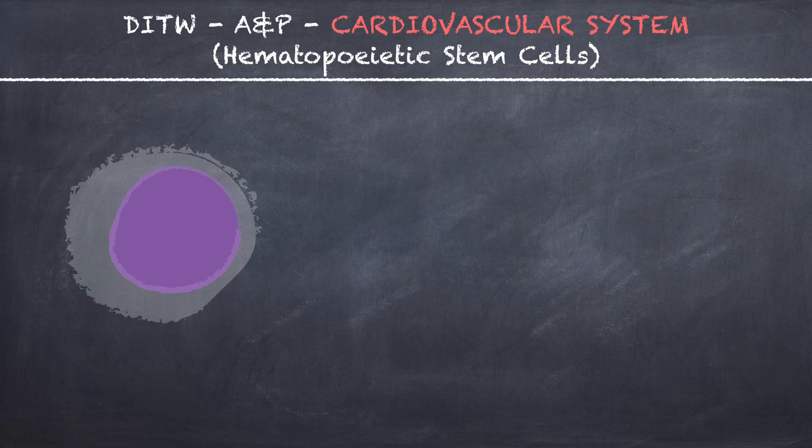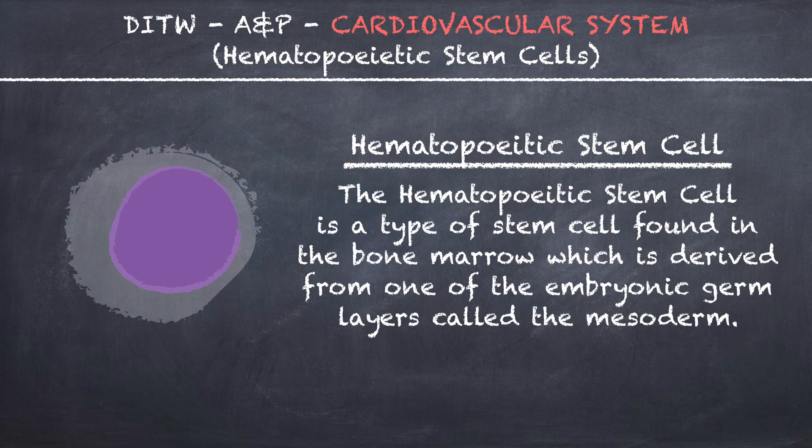This is DITW Anatomy & Physiology, and you are now watching the video on Hematopoietic Stem Cells. The hematopoietic stem cell is a type of stem cell found in the bone marrow, which is derived from one of the embryonic germ layers called the mesoderm.